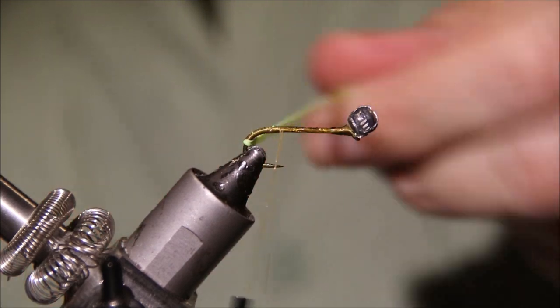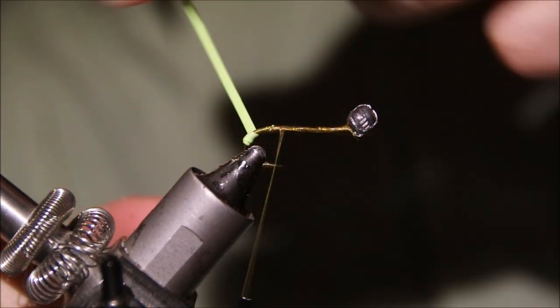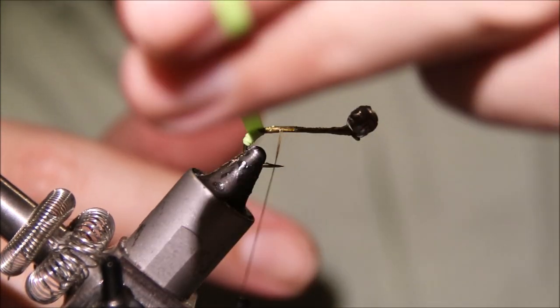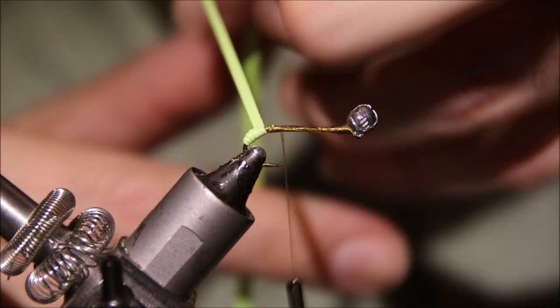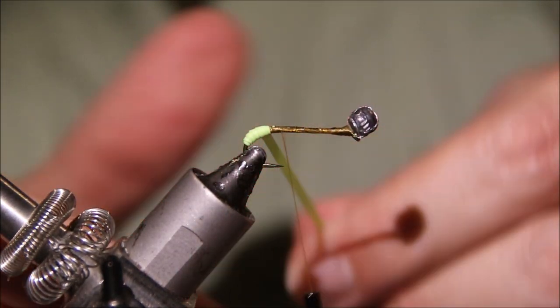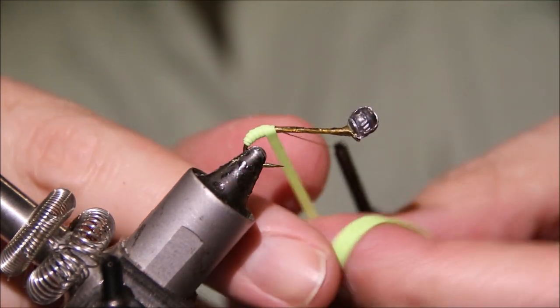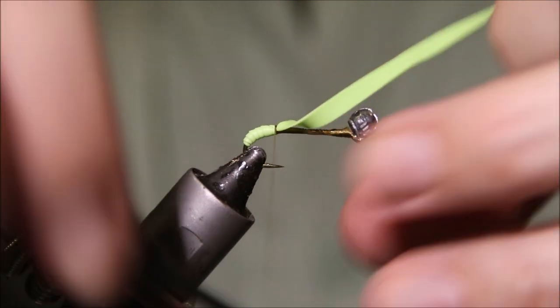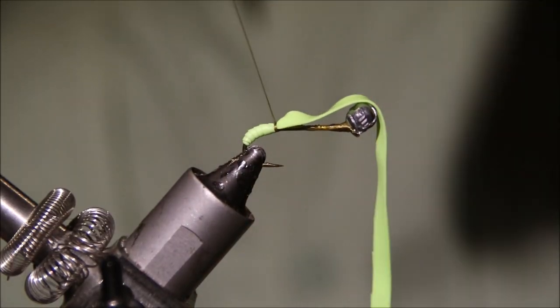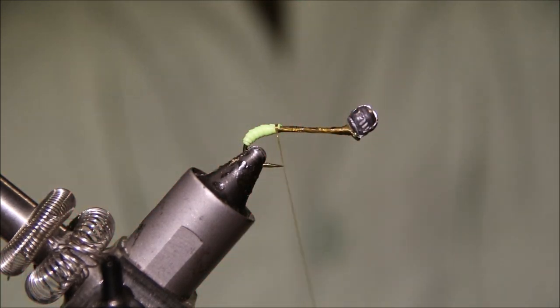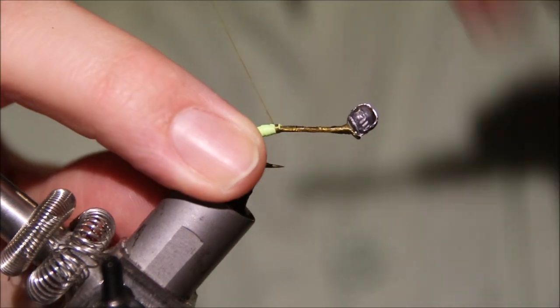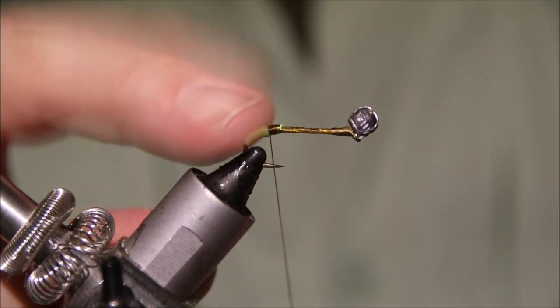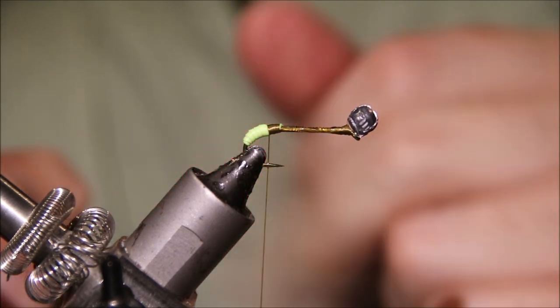Then I'll wind this forward under tension. This creates a segmented, exposed grub. Come all the way up, and when I reach my thread, cross over it two or three turns, always keeping tension on it. Then stretch that, pull it away and it just snaps back—you don't have a big tag. Then I'm going to tie back until I'm about halfway between where the barb was and the point of the hook.